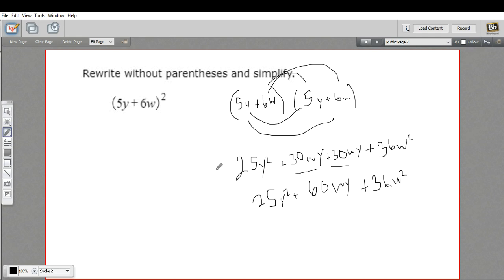The shortcut, if you want to think about it, is the first term is the first term squared. The last term is the second term squared. And the middle term is going to be multiply these two together and then double it. So when you're squaring a binomial, that's a shortcut you may want to keep in hand. But FOILing is always going to work for you.